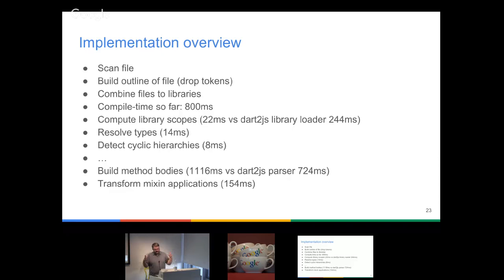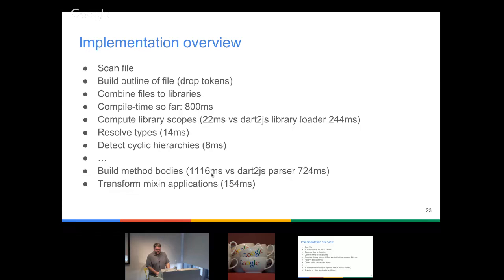Eventually we have a complete outline of the program. An outline is basically an AST tree for the entire program without any method bodies and initializers. Then I start building method bodies, and eventually transform mixin applications. Building the method bodies is less than twice as slow as the Dart2JS parser, and the parser has additional phases it's doing. So something is definitely working here.